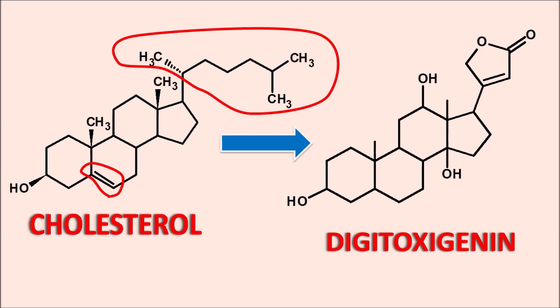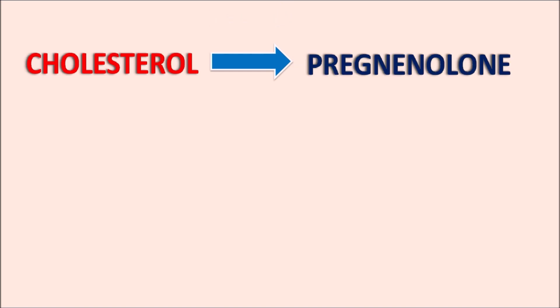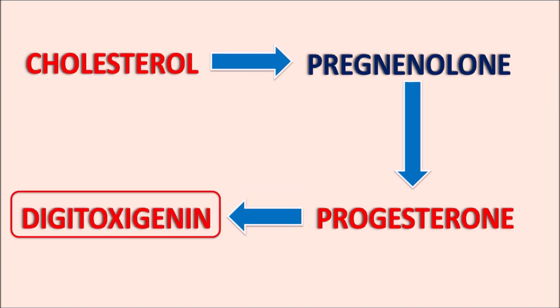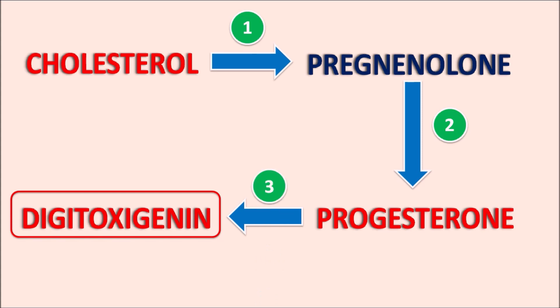In order to understand how Digitoxigenin is derived from cholesterol, we classify the biosynthesis into three steps. The first is conversion of cholesterol to pregnenolone, which is one of the important intermediates. Pregnenolone is then converted into progesterone in the second step, and progesterone is converted into Digitoxigenin in the third step. In this way, Digitoxigenin is derived from cholesterol mainly by three steps.